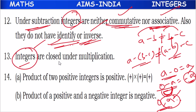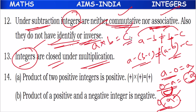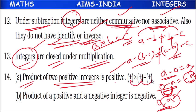But integers are closed under multiplication. If a is an integer and b is an integer, their product c is also an integer — they follow the closure property in multiplication. The product of two positive integers is always positive: plus times plus equals plus. Positive times negative is negative: plus times minus equals minus.